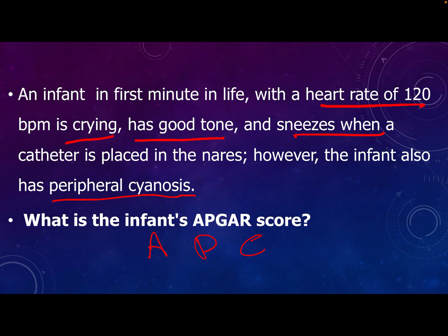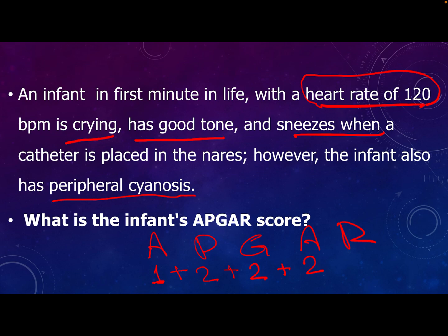Let's calculate, remembering the word APGAR. A for appearance — the baby has peripheral cyanosis, so he scores 1. P for pulse — the baby has a heart rate of 120, which is more than 100, so he scores 2. G for grimace — after stimulation with the nasal catheter he is sneezing, which scores 2. A for activity — the baby has good muscle tone, which scores 2. R for respiration — the baby is crying, which scores 2. Total APGAR score is 9, calculated at the first minute, and we should repeat at 5 minutes.